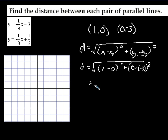So simplifying that, here's what I have. 1 minus 0 squared is 1 squared. 0 minus negative 3 is 3, and I'm squaring that. Notice it is now 1 plus 9, which gives me 10.